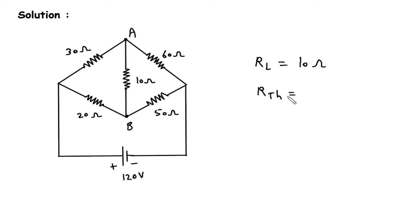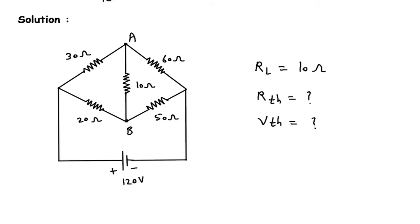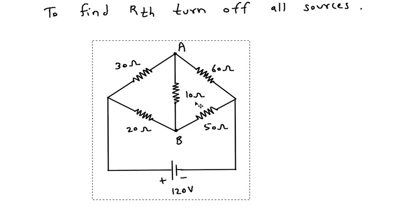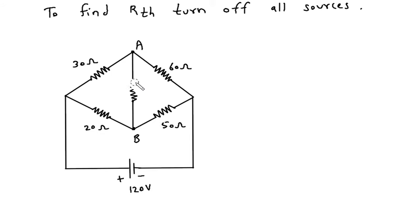Now we have to find RTH and VTH. First we will find RTH. To find RTH, turn off all sources. We have to remove this 10 ohm RL — this will be our RTH. We also have to turn off this voltage source. When we turn off a voltage source, we replace it by its internal resistance, so it will be a short circuit.